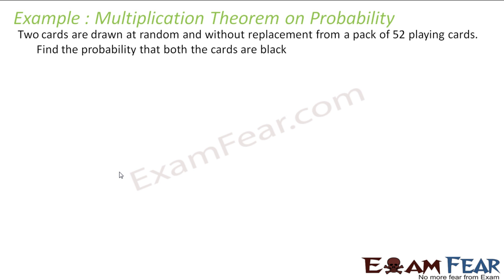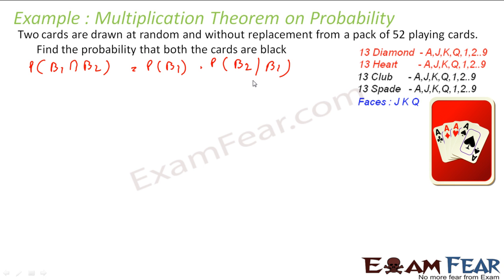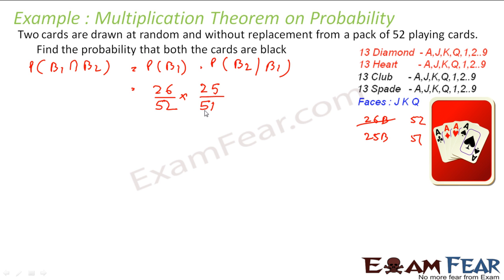Two cards are drawn at random without replacement from a pack of 52 playing cards. Find the probability that both the cards are black. I need P(first black ∩ second black). There are 26 black cards out of 52, so P(first black) = 26/52. Given the first is black, I have 25 black cards left out of 51 total. So P(second black | first black) = 25/51. This is my answer.